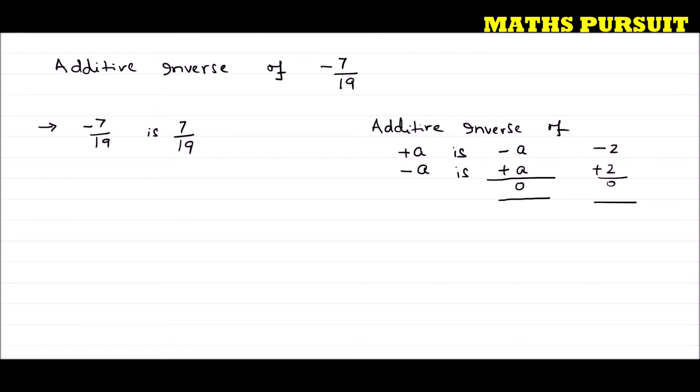That means if we add both of them: minus 7 upon 19 plus 7 upon 19, what will we get? We will get minus 7 plus 7 upon 19, that is equal to 0 upon 19, which equals 0. We know very well that 0 upon any number is 0.